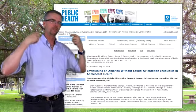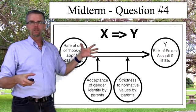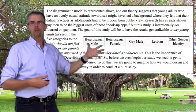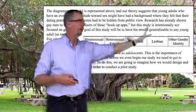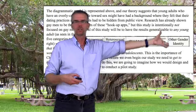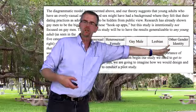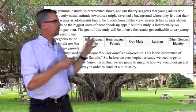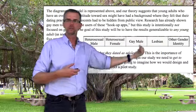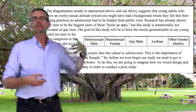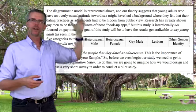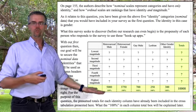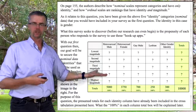In the midterm, you had to have survey participants self-identify as one of five gender identities: heterosexual male, heterosexual female, gay male, lesbian, or other gender identity. That was given to you. Then I asked you as a researcher to design a survey question that would give you a degree of magnitude for how much these participants used hookup apps — apps like Grindr — which create situations where young people put themselves at high risk for sexual assault, sexually transmitted diseases, and other social ills associated with casual approaches to sex.